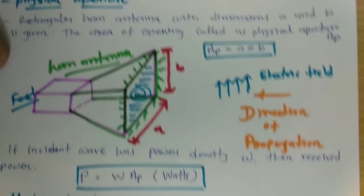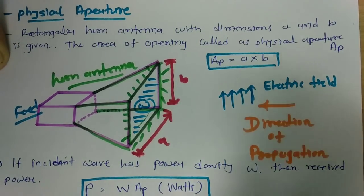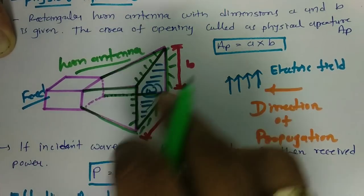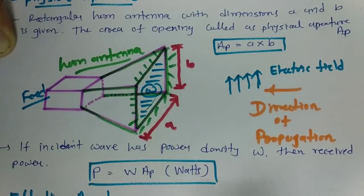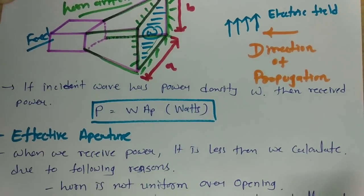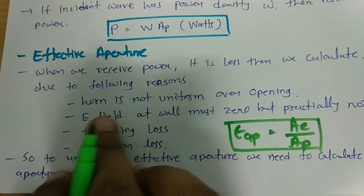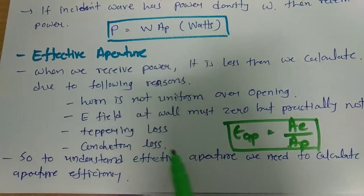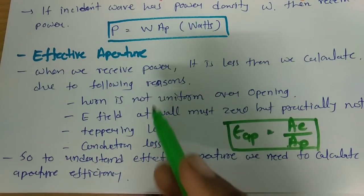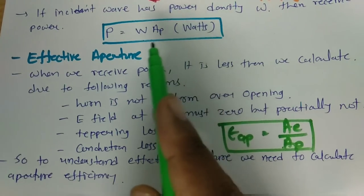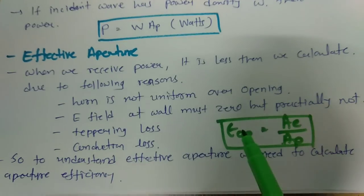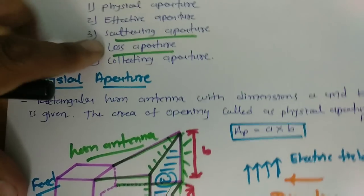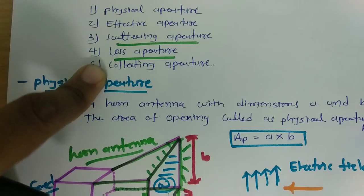In brief: physical aperture is based on the dimensions of the antenna — here dimensions A and B — and based on that one can calculate received power as power density times physical aperture. But practically, received power is less than the theoretical value because the horn antenna may not be uniform over the opening, the electric field at the wall must be zero but practically is not, and there can be tapering loss and conduction loss. To get effective aperture, we calculate aperture efficiency, which is effective aperture divided by physical aperture. Other apertures include scattering aperture, loss aperture, and collecting aperture.